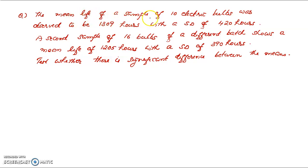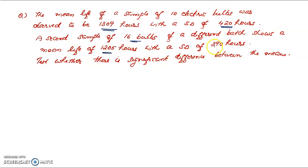The mean life of a sample of 10 electric bulbs was observed to be 1309 hours with a standard deviation of 420 hours. A second sample of 16 bulbs of a different batch shows a mean life of 1205 hours with a standard deviation of 390 hours. Test whether there is significant difference between the means.